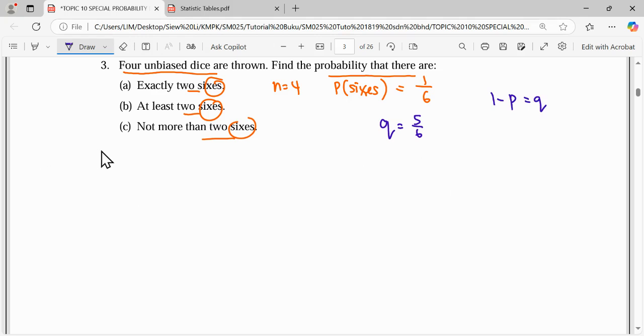Before we start answering the question, we write our distribution. X is the number of dice getting six. X is distributed as binomial. Number of dice is four, getting six is one over six. For the first question, probability exactly two.